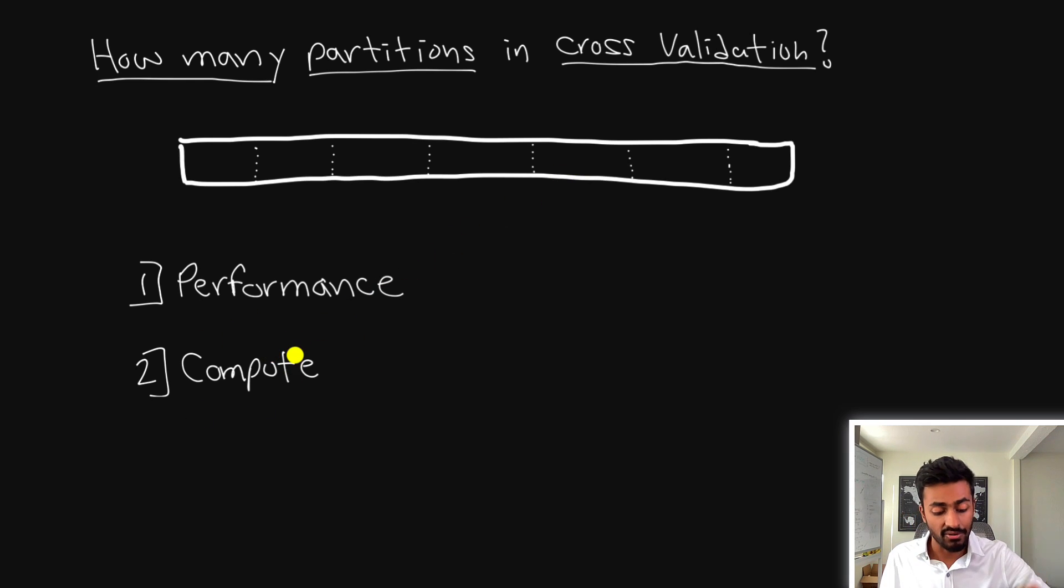Now for computation if you increase the number of partitions chances are it's going to take a lot more time to train but whether this is actually a huge concern depends on the kind of model you're using and the amount of data that you have because if the model itself only takes like maybe 20 to 30 seconds to train it's okay to increase the number of partitions without being too worried about computation power and resources. And so how many partitions and cross validation really becomes less of an important question as you have more and more data.